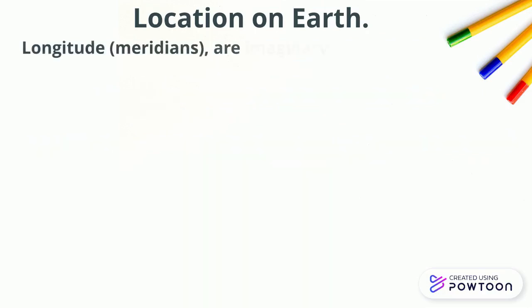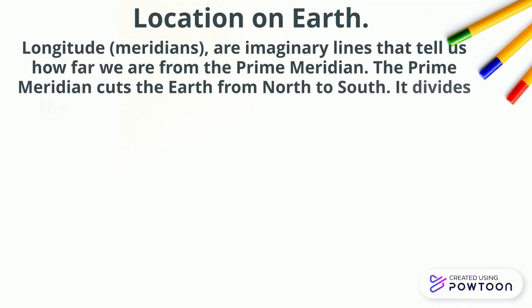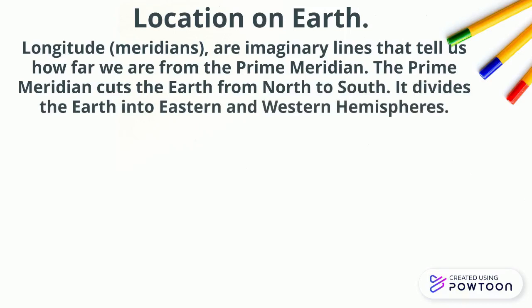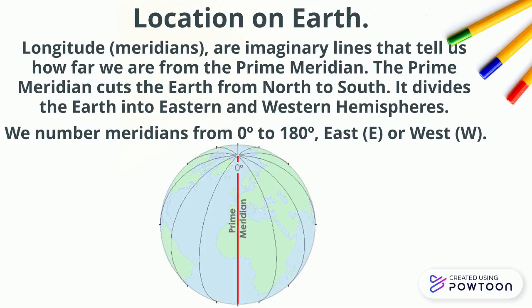On the other hand, we have longitude, or meridians, which are imaginary lines that tell us how far we are from the prime meridian. The prime meridian cuts the Earth from north to south, and it divides the Earth into eastern and western hemispheres. We number meridians from 0 degrees to 180 degrees east or west, and here you are a picture with the meridians.